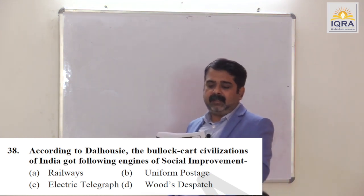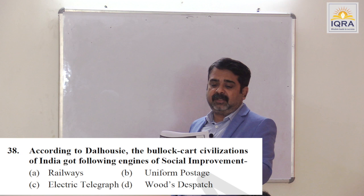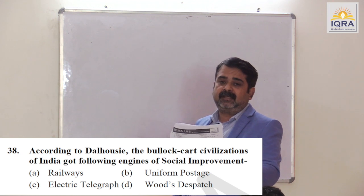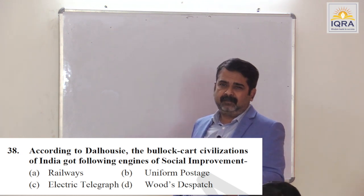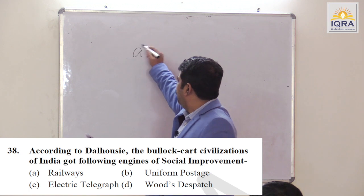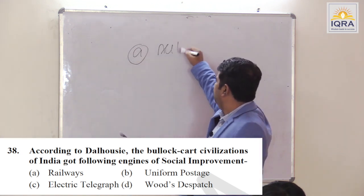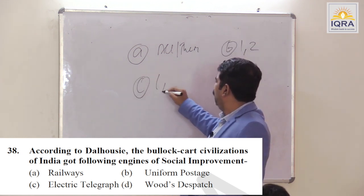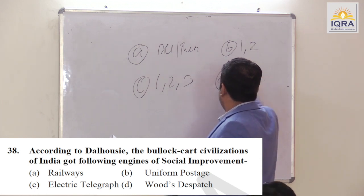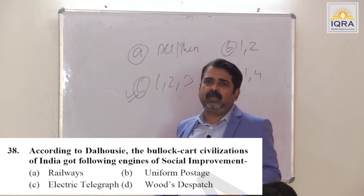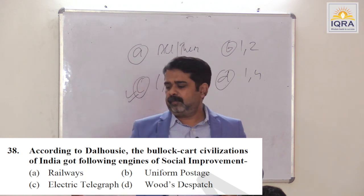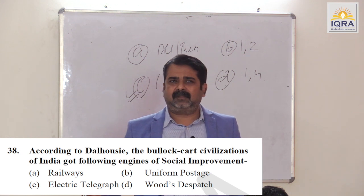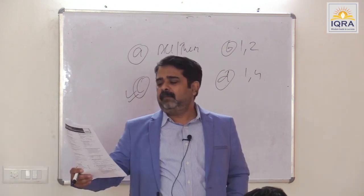According to Dalhousie, the bullock cart civilization of India got the following engines of social improvement: railways, uniform postage, and electric telegraph. There appears to be a printing mistake in this question — please do the correction. The answer should be C: 1, 2, and 3. Apologies for the inconvenience.